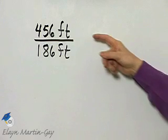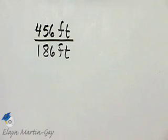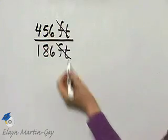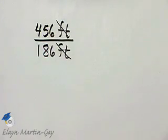We simply want to write this ratio as a fraction in simplest form. Because the units are the same, we can divide the units out and then we want to simplify the fraction.